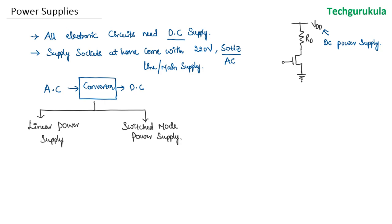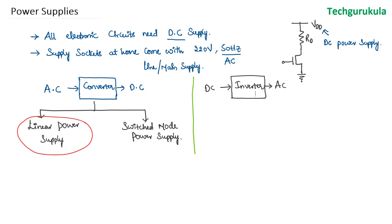In our course we are interested in going into detail on linear power supplies. Just for completeness: if we have a DC supply, the circuitry that converts DC to AC is called an inverter, used in uninterrupted power supplies or standby power supplies, and also in electric cars. But that is not our point of interest here — it is only about AC to DC conversion, and specifically the linear power supply.